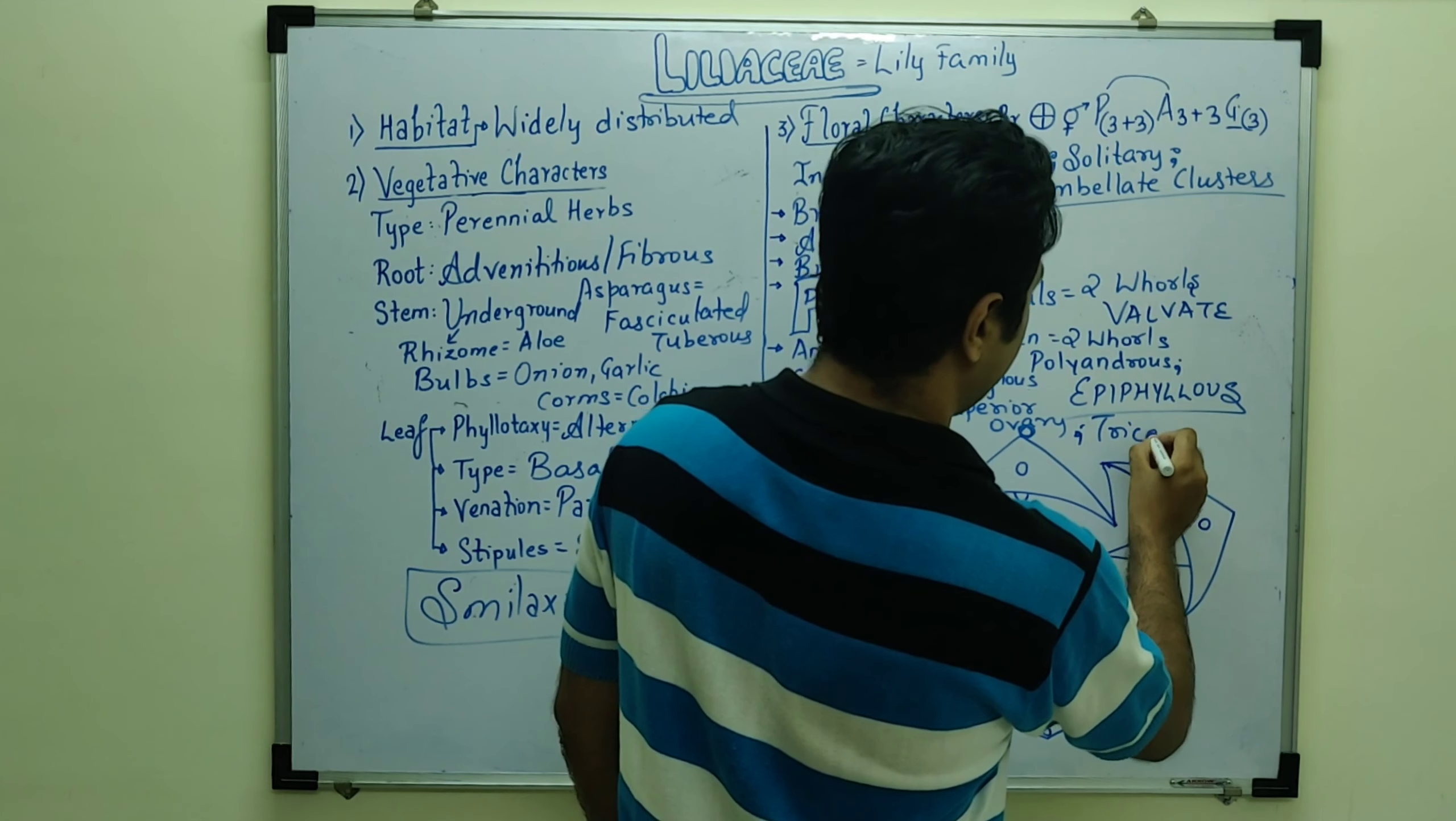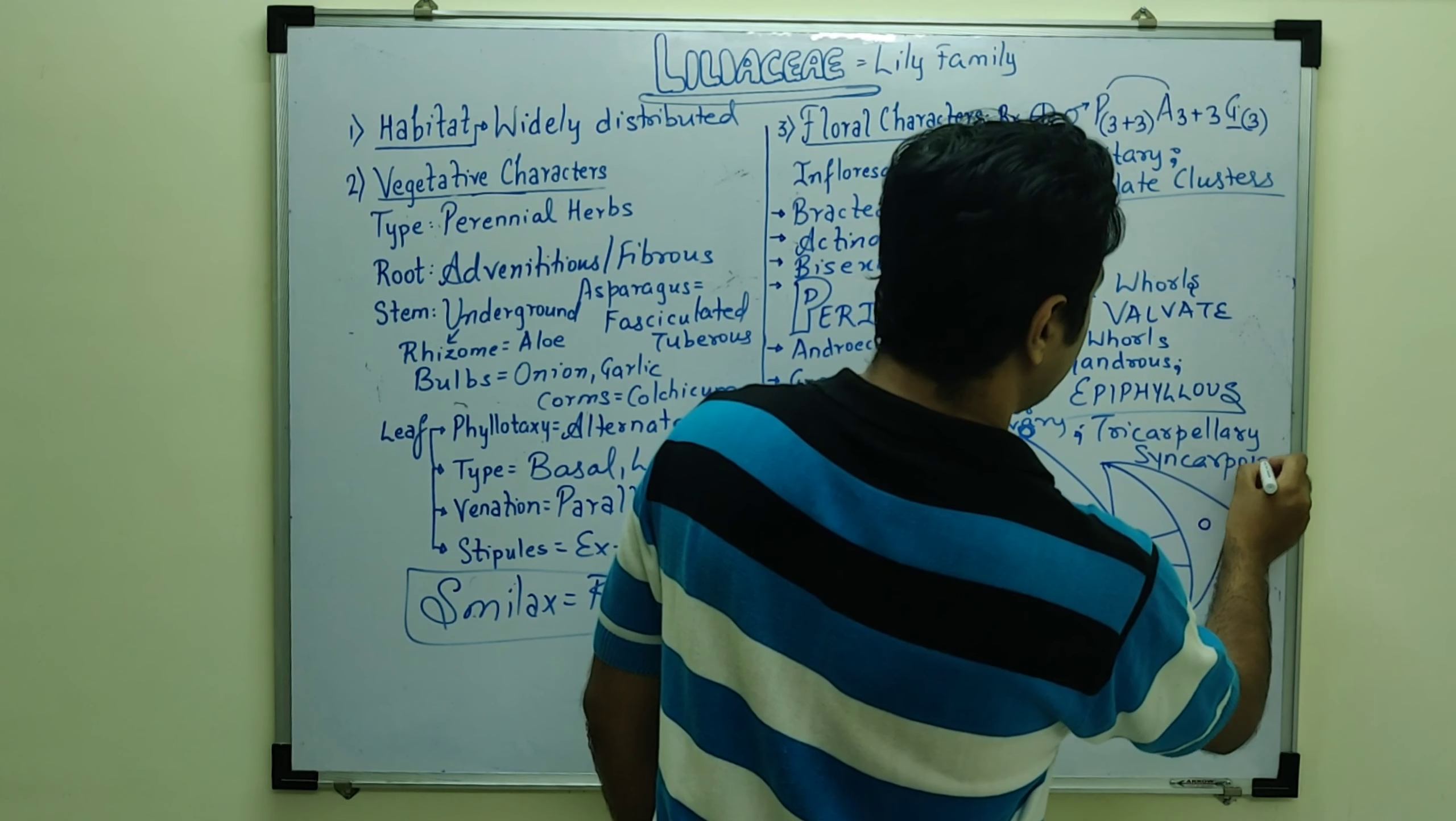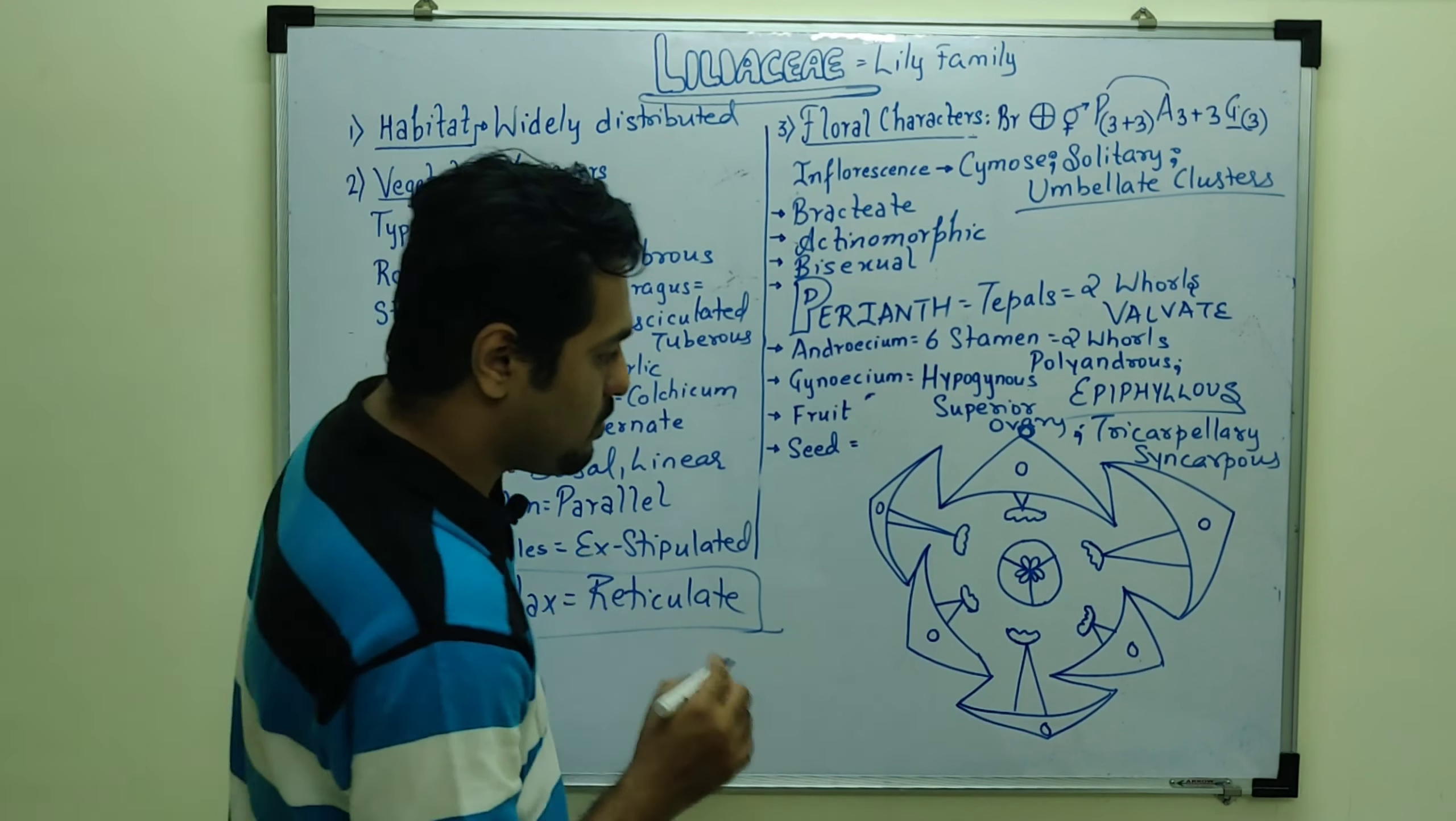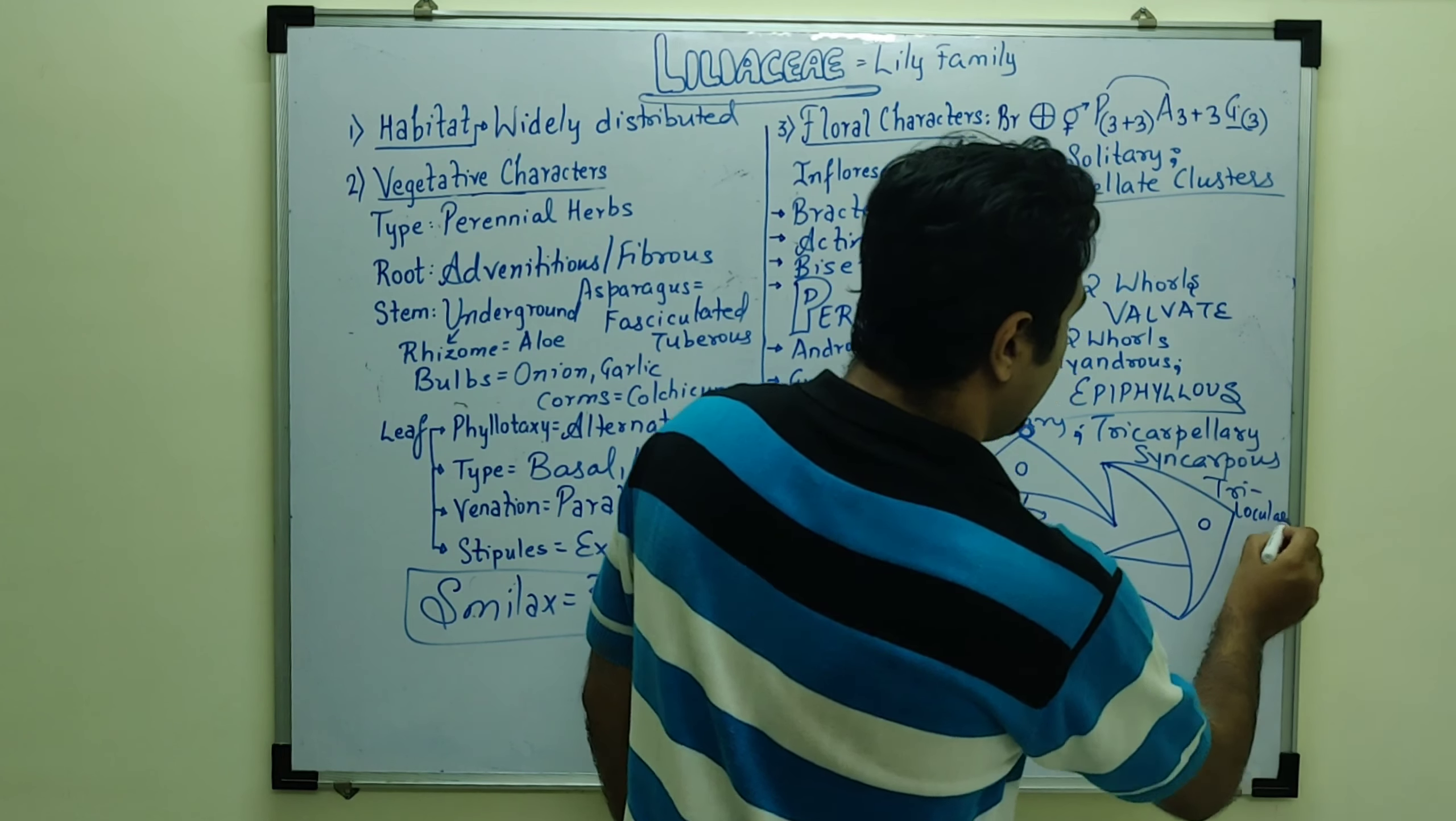Here, 3 carpels are there, so we can say tricarpellary. Fused is syncarpous. Fusion, 3 families was syncarpous. Tricarpellary, 3 chambers.